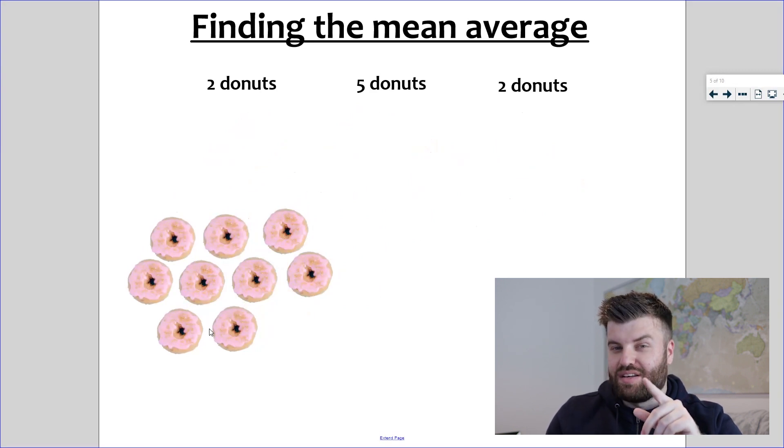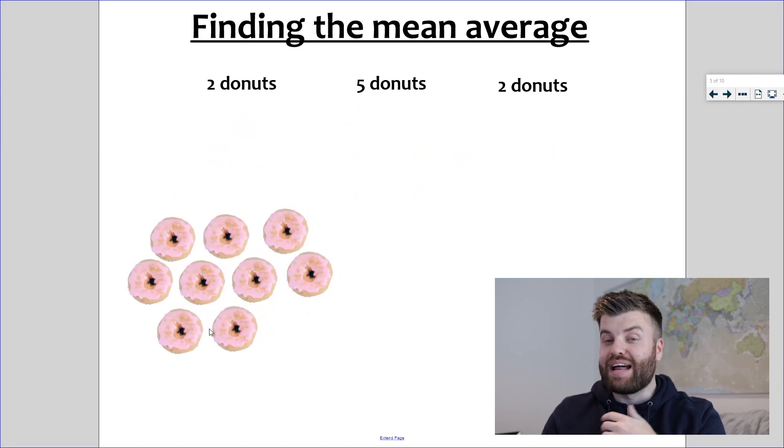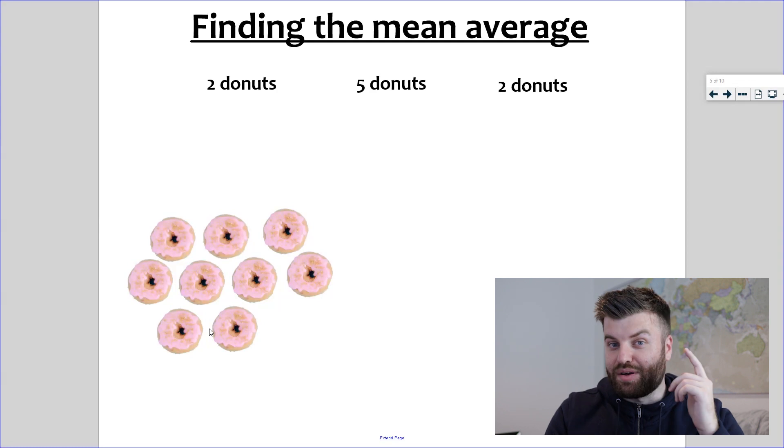Once you've added up all of the data, and in this case we've got nine donuts in total, you then equally share that data out between the number of data points you had in the first place. By a data point I just mean those numbers you started off with. We had three people, we had three numbers, so we've got a total of nine and now we're going to divide by three because that's how many numbers we had. Nine divided by three, using your times table knowledge, you should know is three.